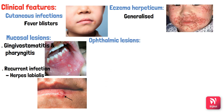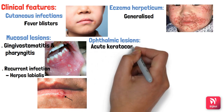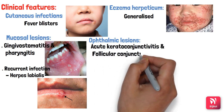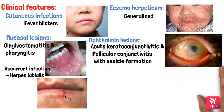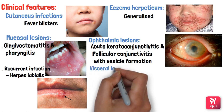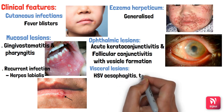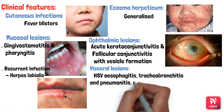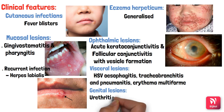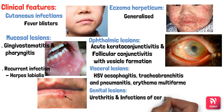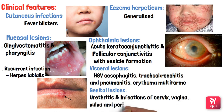Ophthalmic lesions also occur, resulting in acute keratoconjunctivitis and follicular conjunctivitis with vesicle formation, and can lead to keratitis. Visceral lesions include HSV esophagitis, tracheobronchitis, and pneumonitis; sometimes erythema multiforme can also be caused by herpes simplex virus. Genital lesions include urethritis in males, and infections of the cervix, vagina, vulva, and perineum in females.